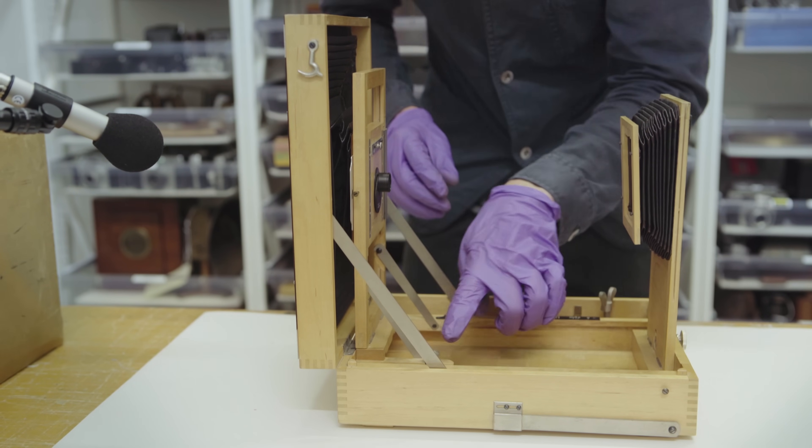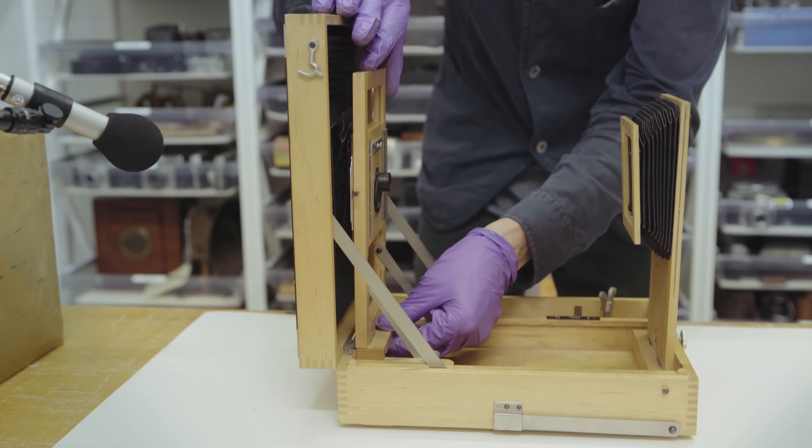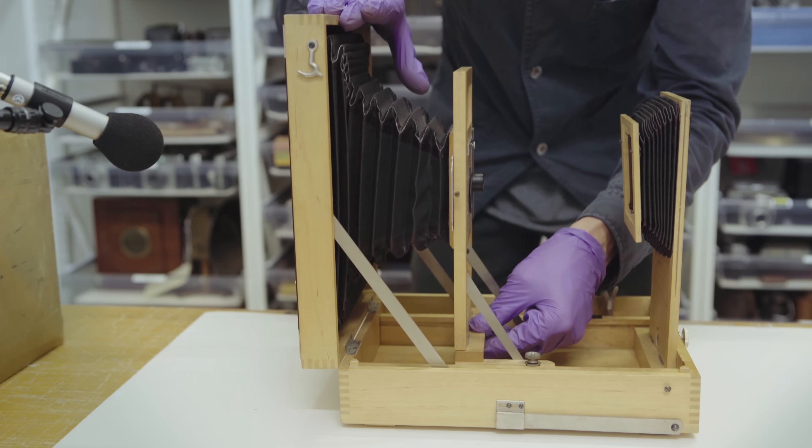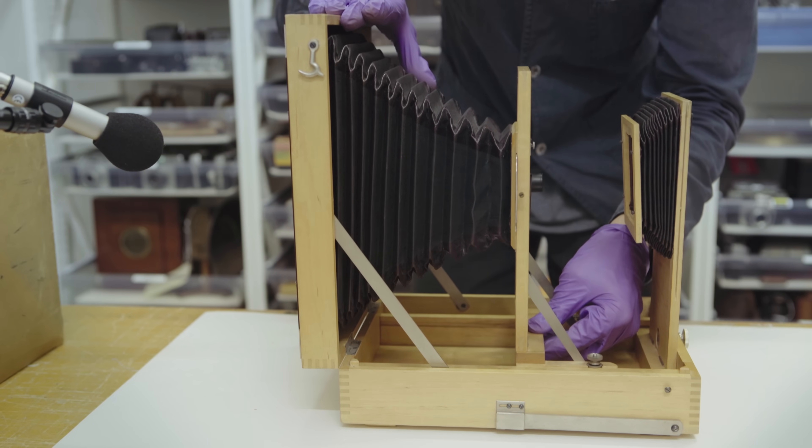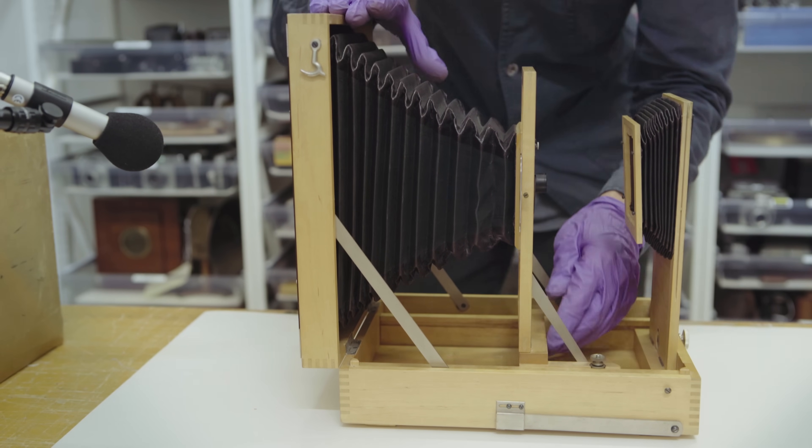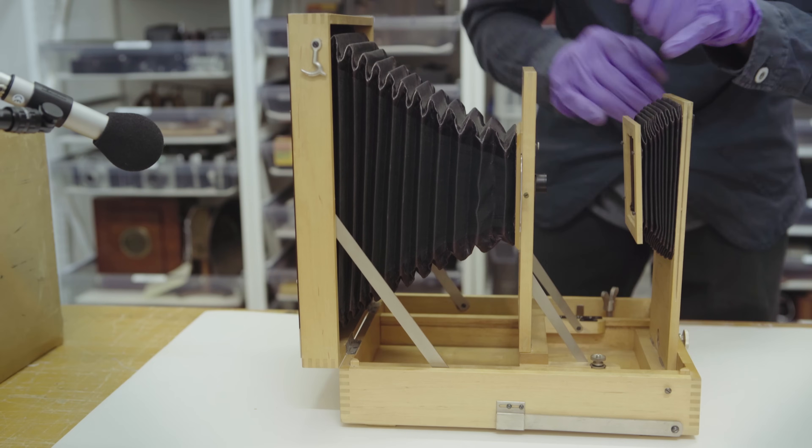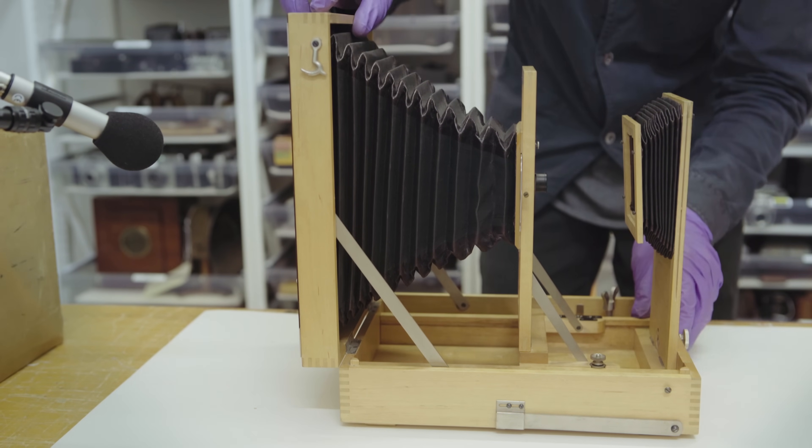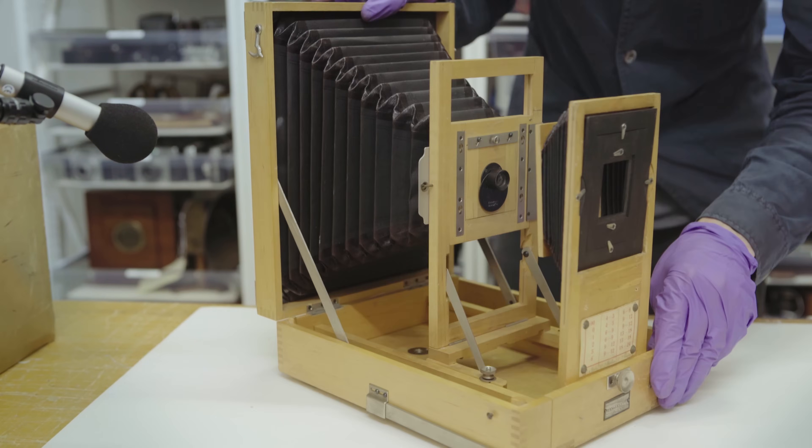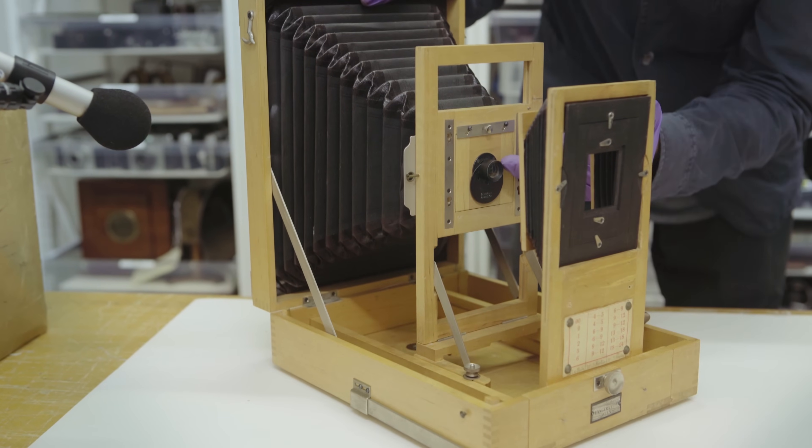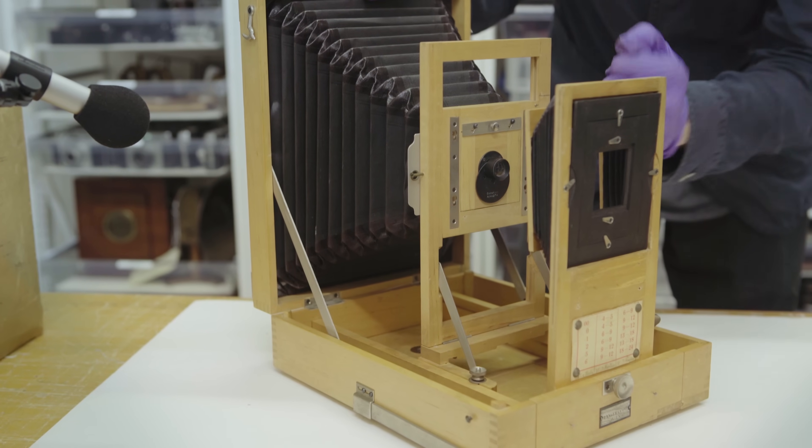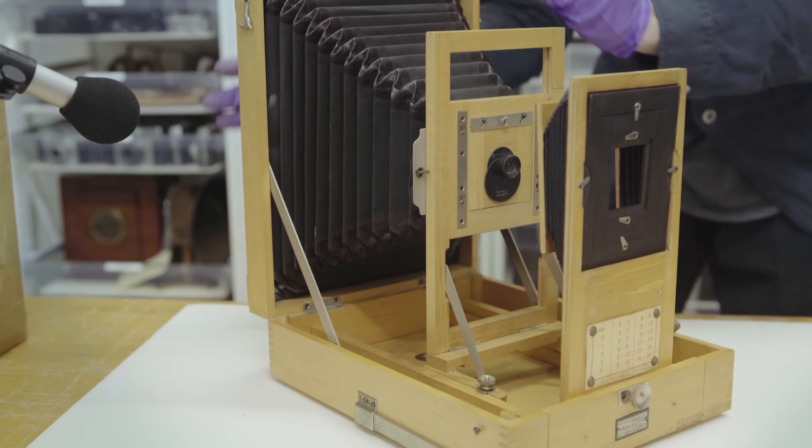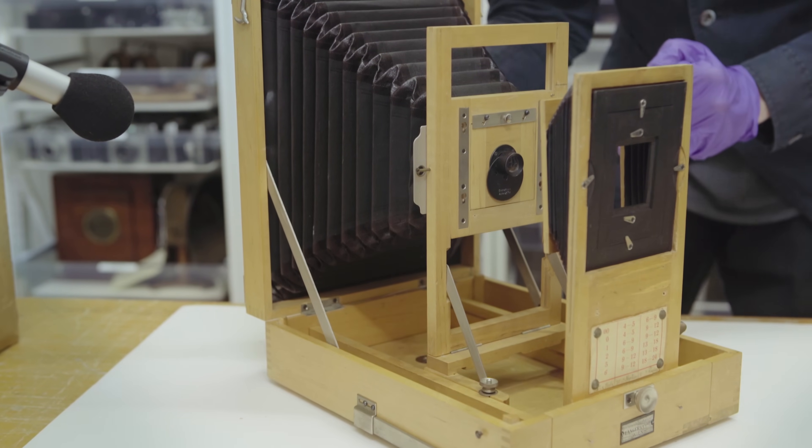Then just loosen this knob here and this should just slide out. So just before I pull this side over creating the light tight seal, if I just turn it towards you, you can see a small lens here. That would focus the image of the negative onto the sensitized paper on this side.